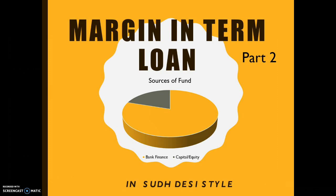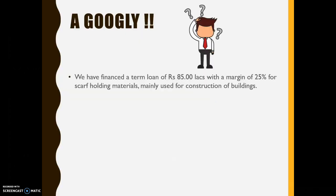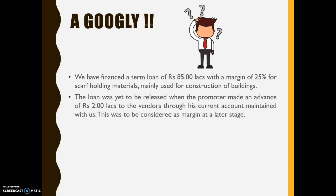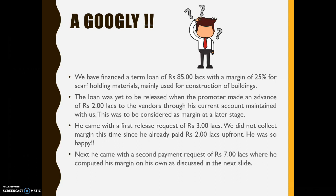Let us continue our discussion from where we left. We have financed a term loan of Rs 85 lakhs with a margin of 25% for scarf holding materials, mainly used for construction of buildings. The loan was yet to be released when the promoter made an advance of 2 lakhs to the vendors through his current account maintained with us. This was to be considered as margin at a later stage. He came with the first release request of 3 lakhs. We did not collect the margin this time since he had already paid 2 lakhs upfront. He was so happy. Next time he came with a second payment request of 7 lakhs where he computed his margin on his own as discussed in the next slide.